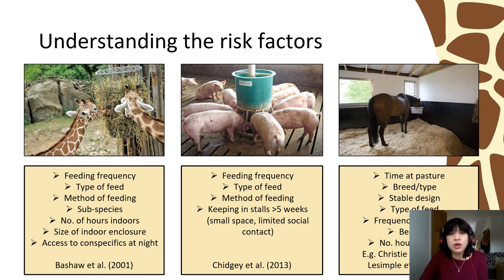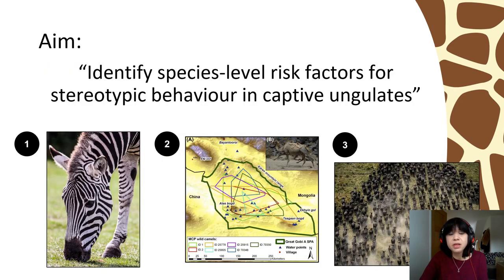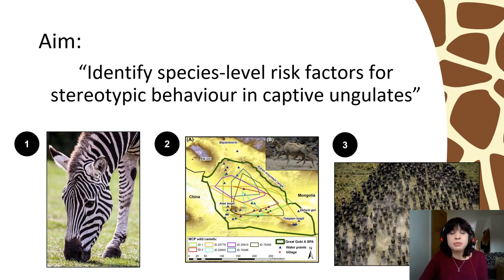Yet in the literature, we see vast interspecies differences in the type, the prevalence, and the frequency of stereotypies across captive ungulate species. What we don't know is what drives some species to seem more susceptible than others. In our study, we set out to fill in some of these gaps. We aimed to identify species-level risk factors for stereotypic behaviour in ungulates, by examining not just captive housing and husbandry, but also whether aspects of species' wild behavioural ecology were predictive of stereotypy.